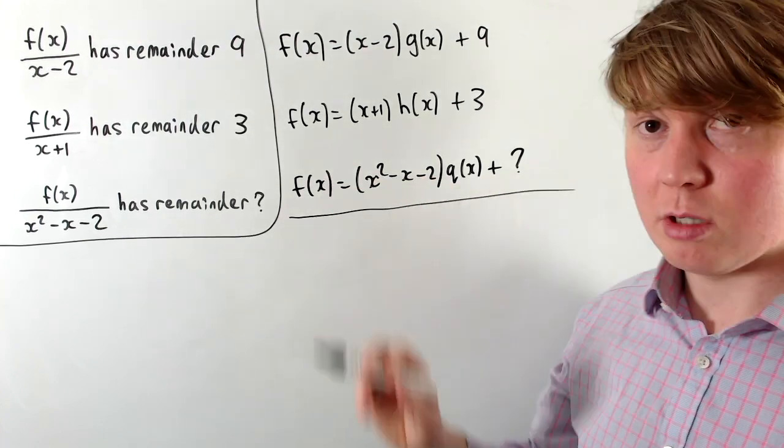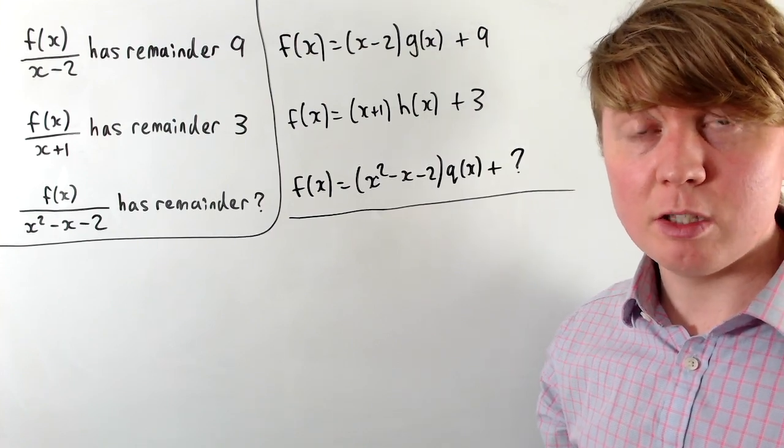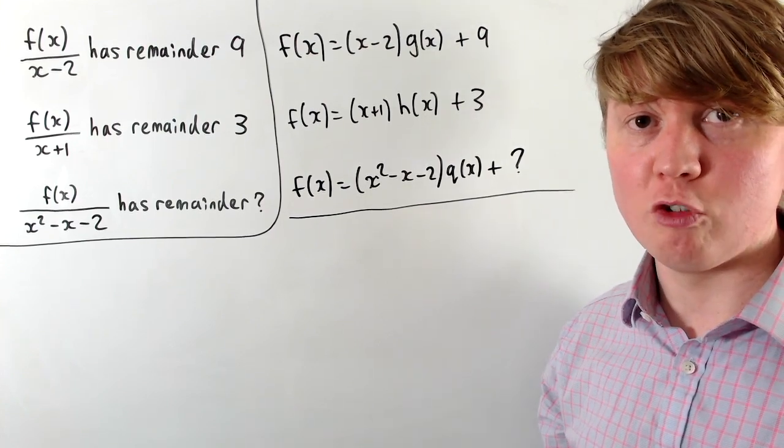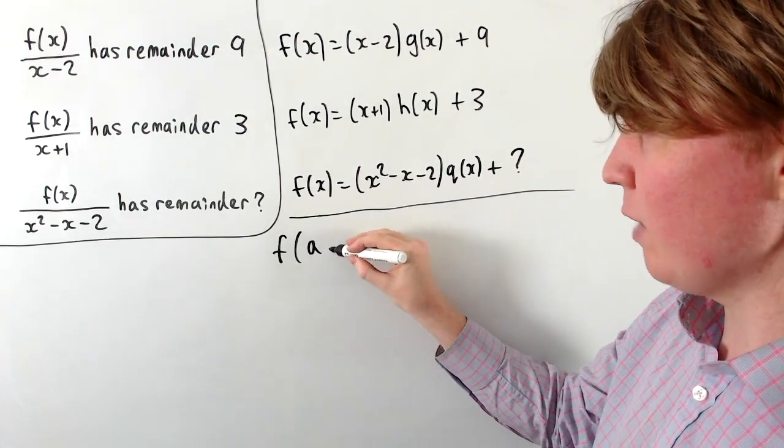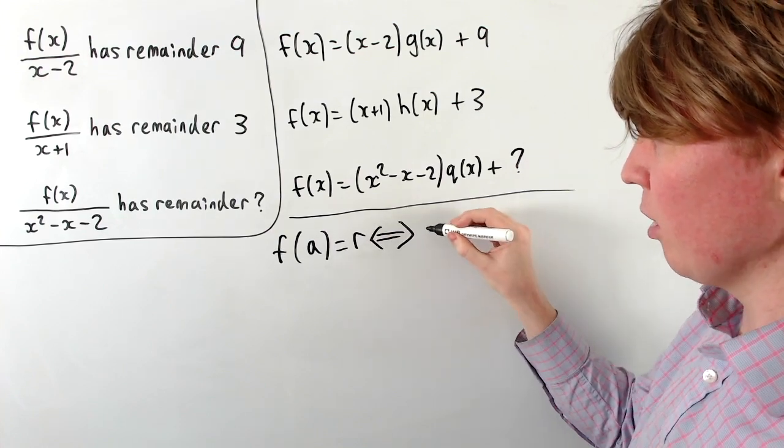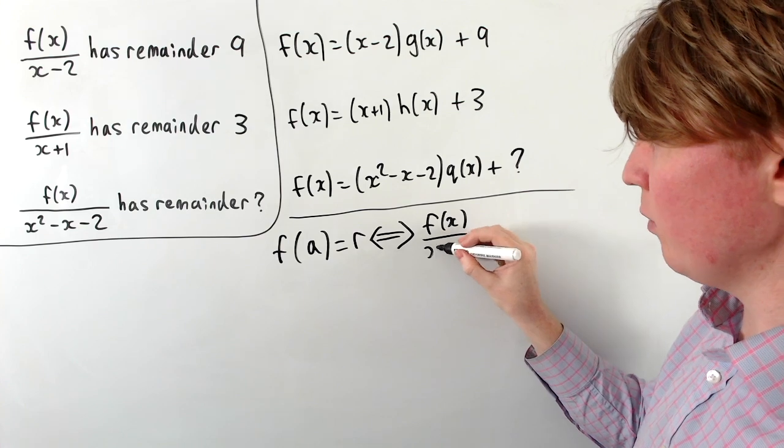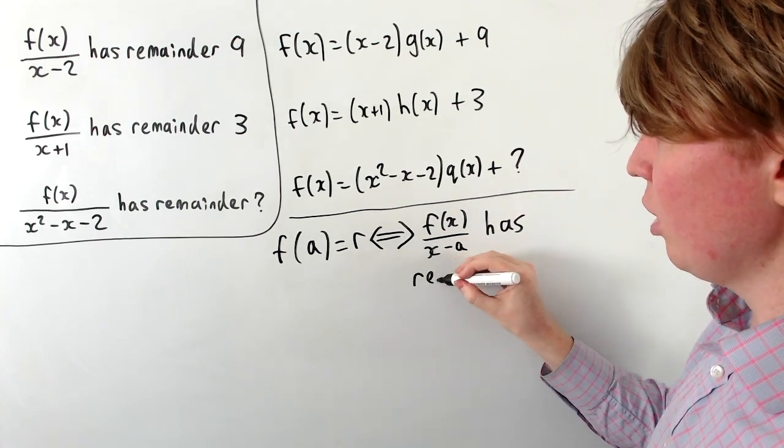The most useful tool we're going to use here to solve this problem is called the remainder theorem. And the remainder theorem, I think, is quite intuitive when presented in the right way. This is telling us that if you have the statement f(a) equals r, this is equivalent to saying that f(x), when we divide this by the factor x minus a, has remainder r.